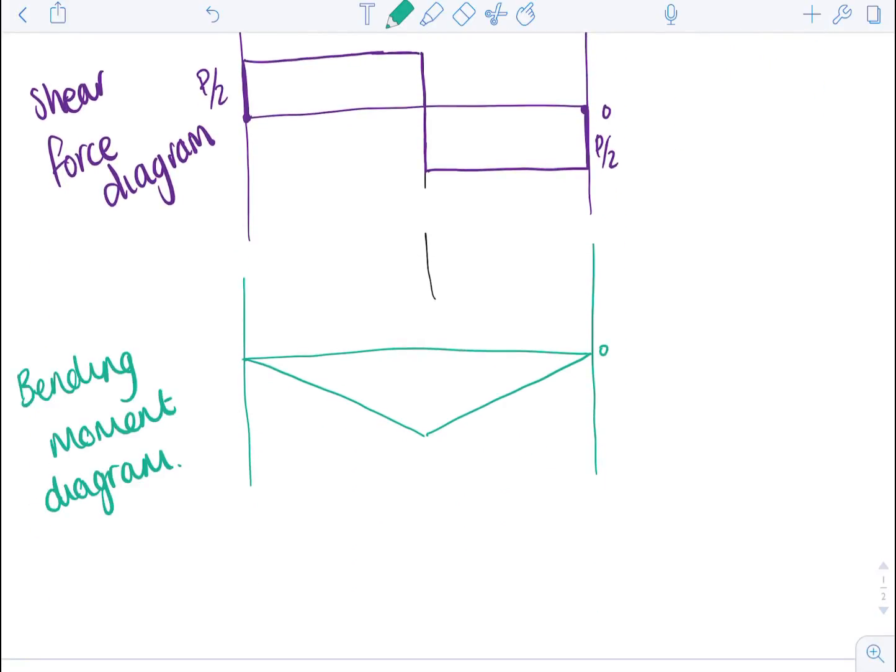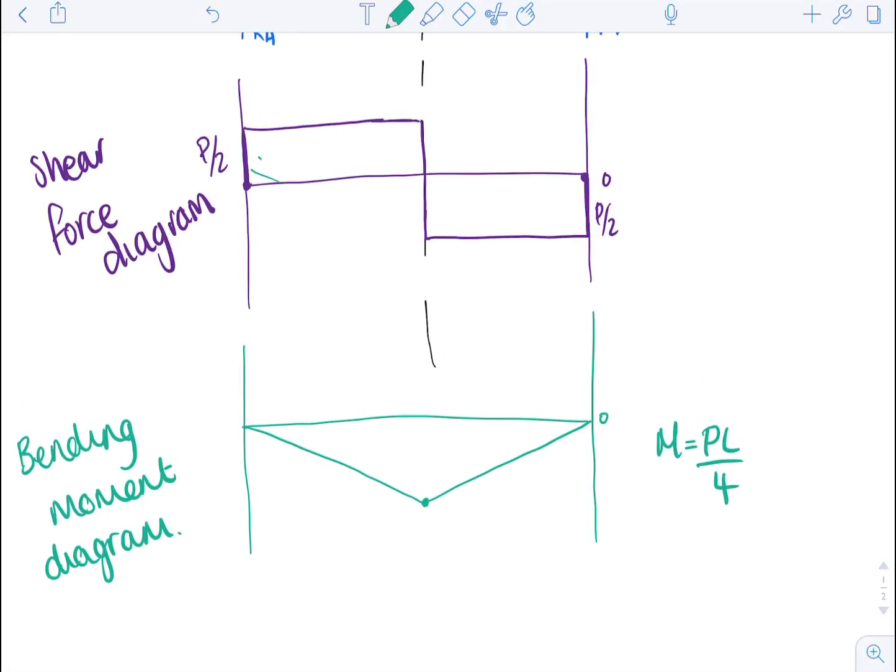And there are two ways that you can calculate this maximum moment down here. You can use this equation, which is just P over 4, or you can make use of the shear force diagram to calculate it.